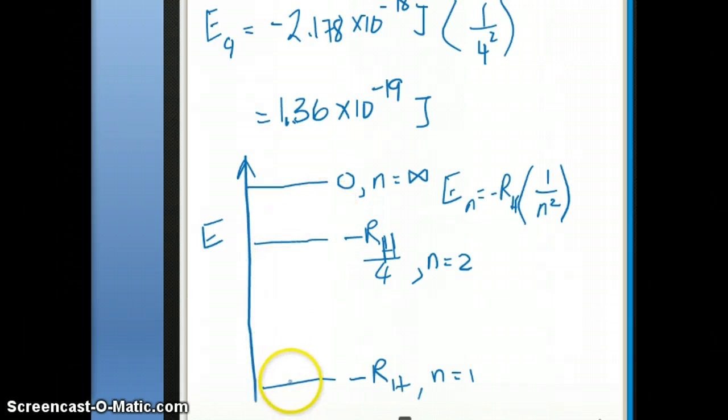You notice that from going from level 1 to level 2, you get a big jump. Now, if you go to level 3, now this becomes negative RH over 3 squared, which is just negative RH over 9. That difference is closer now. So you get probably right here is what negative RH over 9 is, for n equals 3.